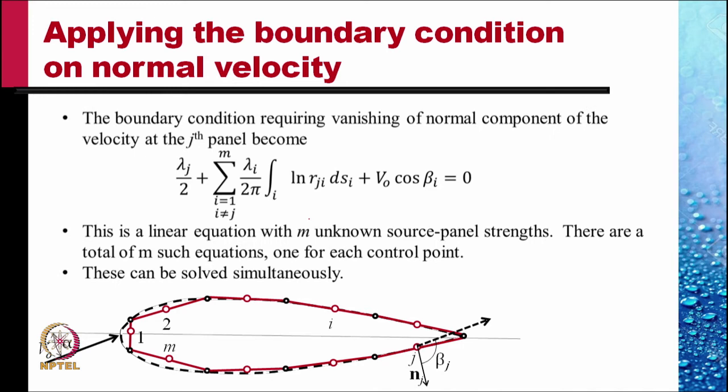The boundary condition requiring vanishing normal components of the velocity at the jth panel becomes lambda j by 2, the contribution of jth panel, plus the contribution of all other panels except i equals lambda j, plus the contribution of the free stream v naught cosine beta i should be zero. The normal velocity should be zero.